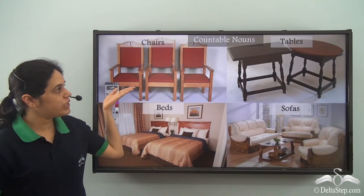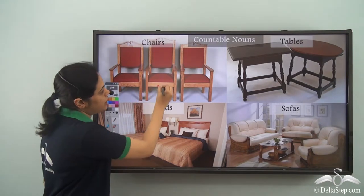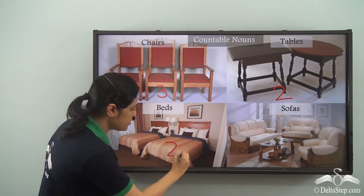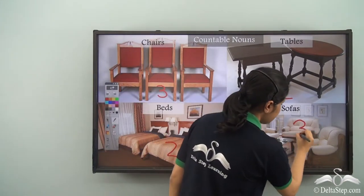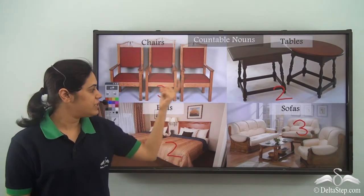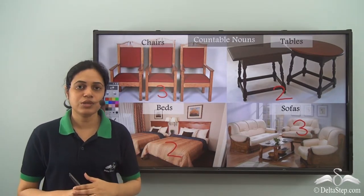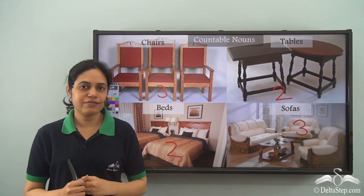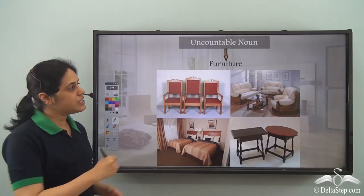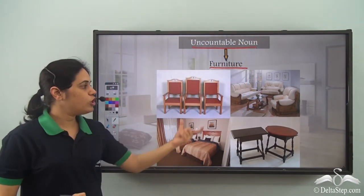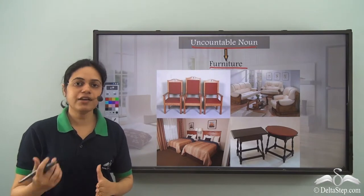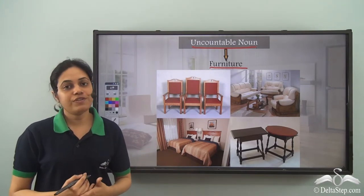If I ask you how many chairs are there — there are three chairs. How many tables are here? Two tables. How many beds are here? Two beds. How many sofas are here? Three sofas. So we got the answer to 'how many' in each case, meaning chairs, tables, beds and sofas are all countable nouns. But what do we call them collectively? Together they are known as furniture. Furniture is an uncountable noun. Although chairs, tables, beds and sofas are countable, when they come together they are referred to as furniture, which is uncountable. We never say 'how many furniture' — we always say 'how much furniture.' For example, there is little furniture in this room.